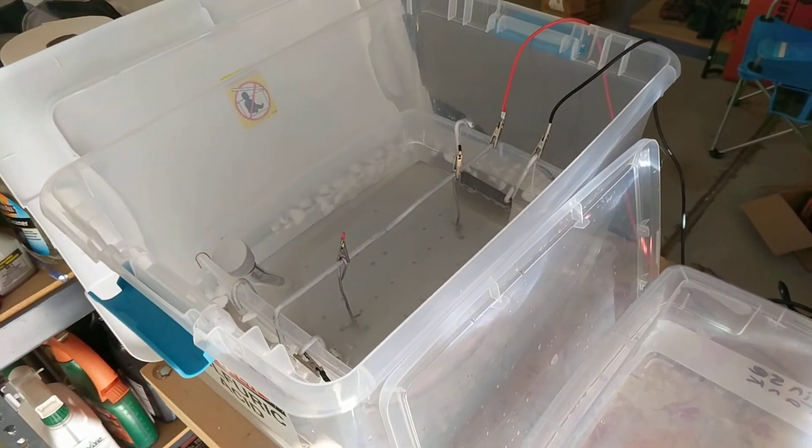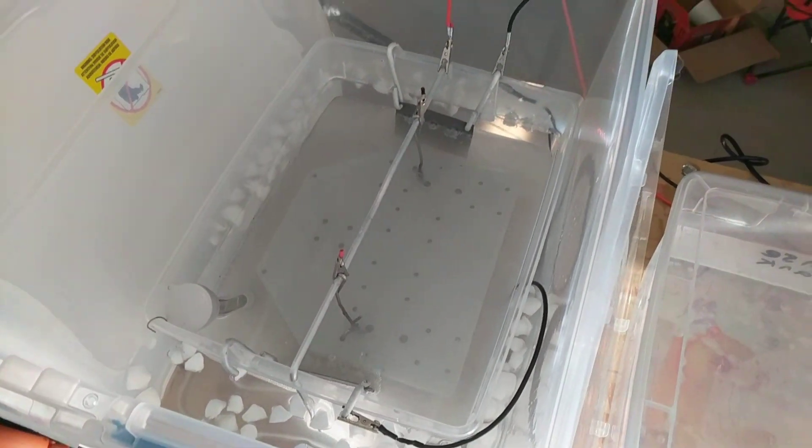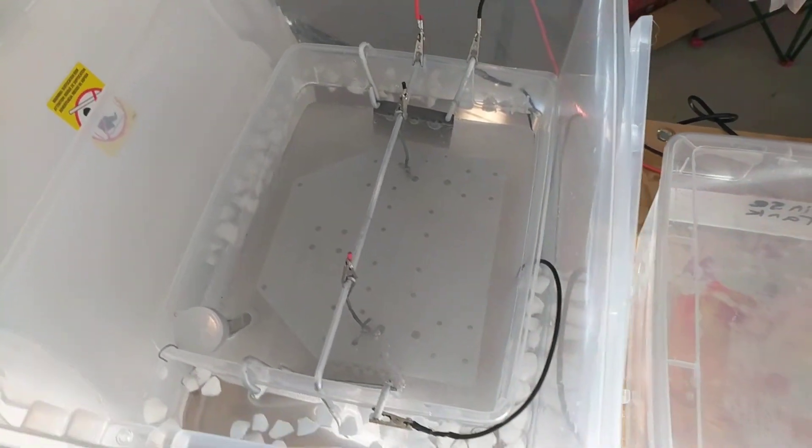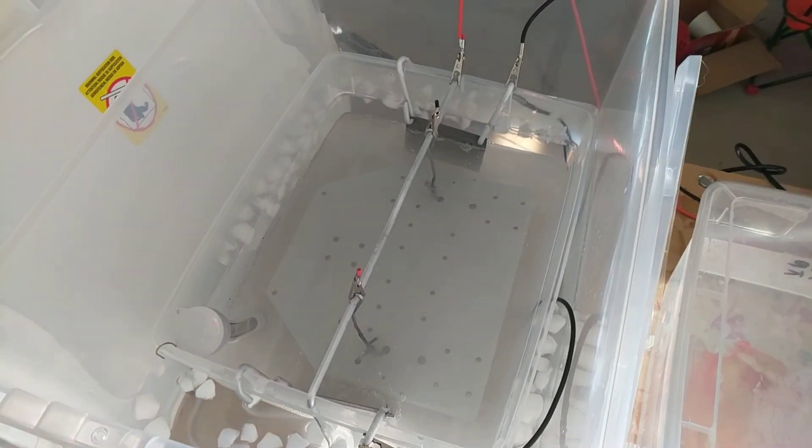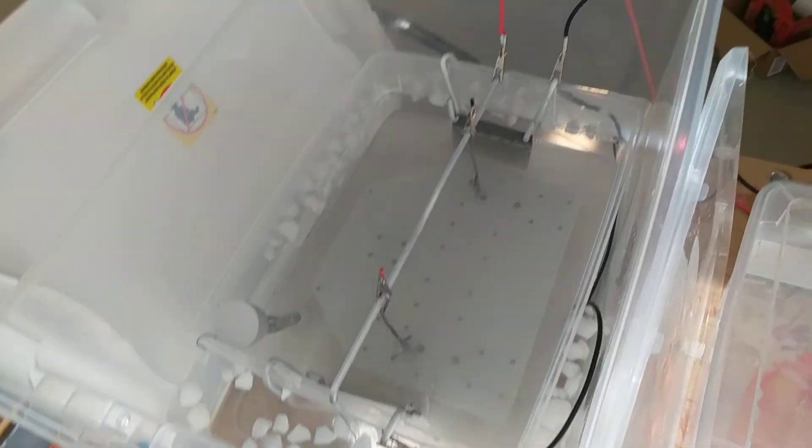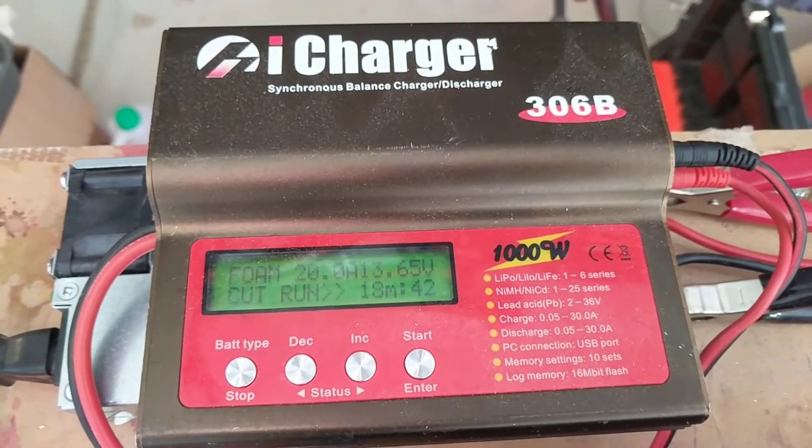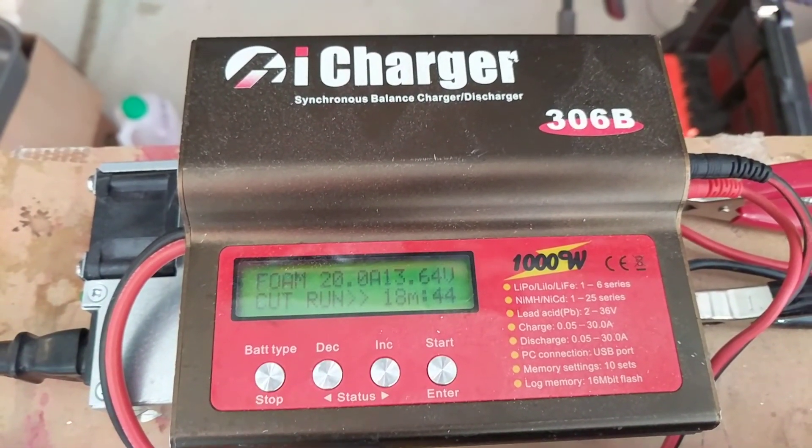I got my anodizing line going here. This is the biggest part I've done yet - CAD model says it's 230 square inches. So I'm doing 20 amps for an hour.